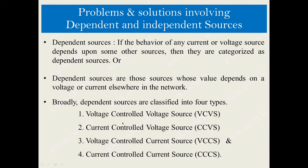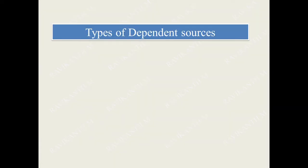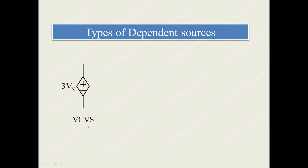How are we going to implement problems involving dependent sources? Let us start with an example of representation of dependent sources. In this example, you can see a diamond-shaped box with plus and minus and a multiplier variable 3Vx. This box in diamond shape is a voltage source multiplied with amplitude 3 and variable Vx, so it becomes a voltage controlled voltage source, abbreviated as VCVS.